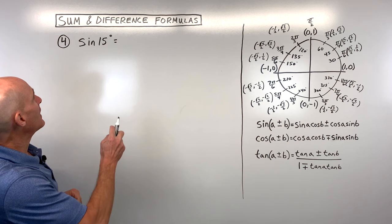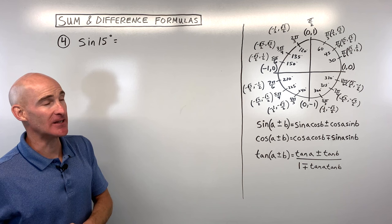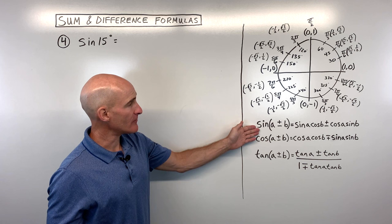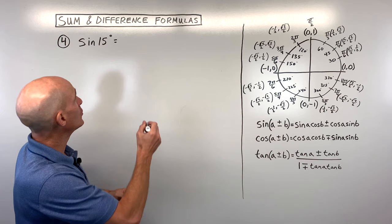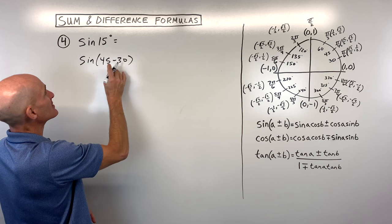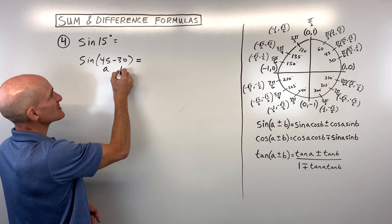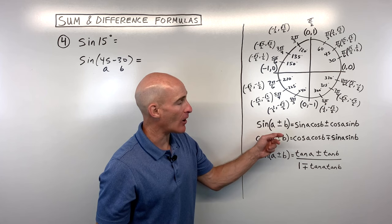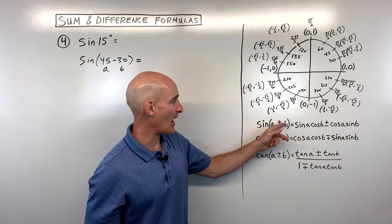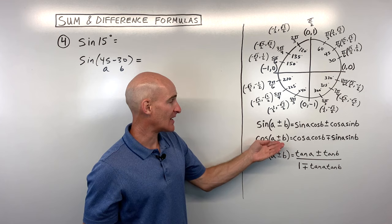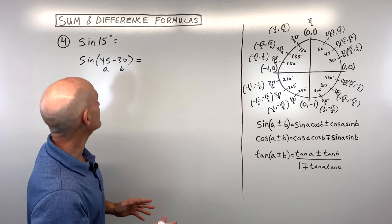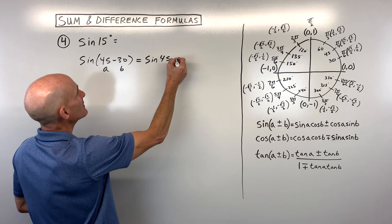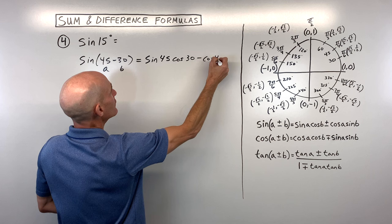How would you calculate the sine of 15 degrees — an exact value? Two angles that subtract to 15: I'll use sine of 45 minus 30. Our A is 45 degrees and B is 30 degrees. Using the sine difference formula — sine is the same, so if you subtract, you subtract on the right — this expands to: sine(45) × cosine(30) − cosine(45) × sine(30).